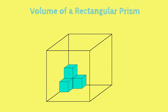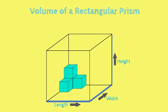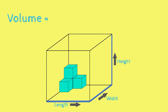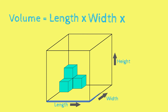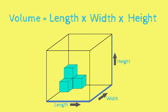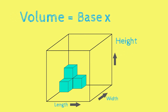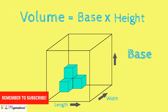We can start by looking at the dimensions of a rectangular prism. Every rectangular prism has a length, a width, and a height. If we wanted to find the volume, we would need to multiply the length times the width times the height. Another way of finding the volume of a rectangular prism is base times height, where the base consists of the length times the width.